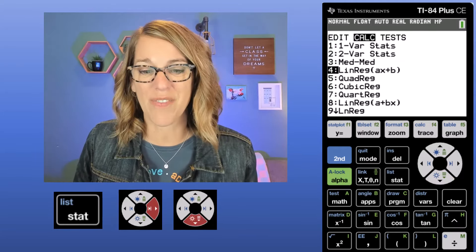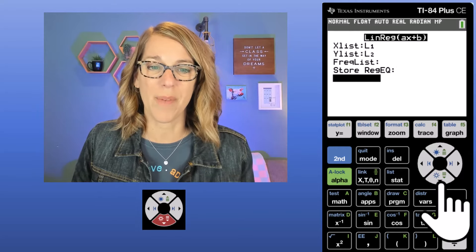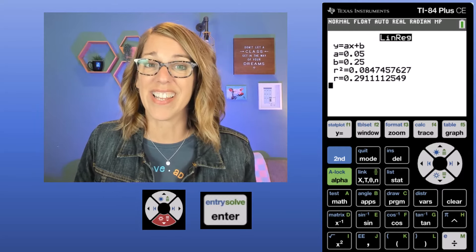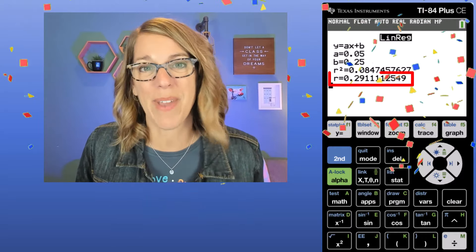Now I do want L1 and L2 as my x and y list. I arrow down, I'm going to skip past the frequency list and the store option until I hit calculate, and then enter, and there's my R value.